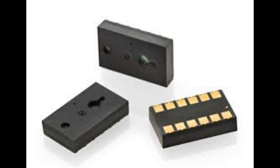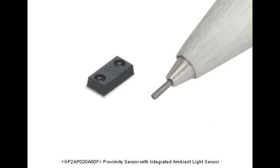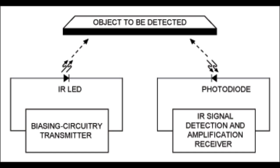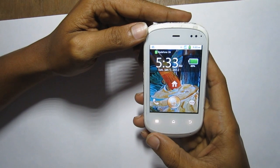In a proximity sensor, two active devices are used: a photodiode and an IR LED. Before the end of this video, I will show you how the proximity sensor looks inside a mobile phone. The proximity sensor often emits an electromagnetic field and looks for changes in the return field. If any changes occur in the targeted electromagnetic field, then the display goes off.